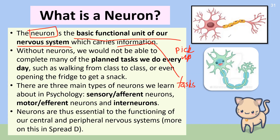Different types of neurons carry different types of information. Although this is the basic generic neuron most of us are familiar with, we do have different types: motor neurons, sensory neurons, and interneurons. Without neurons, we can't really do any of the planned tasks we intend to do every single day. Walking from class to class is only possible because neurons allow us to get out of bed and walk where we need to be. All these functions rely on many neurons working together, forming what we call neural pathways — chains of neurons working together.